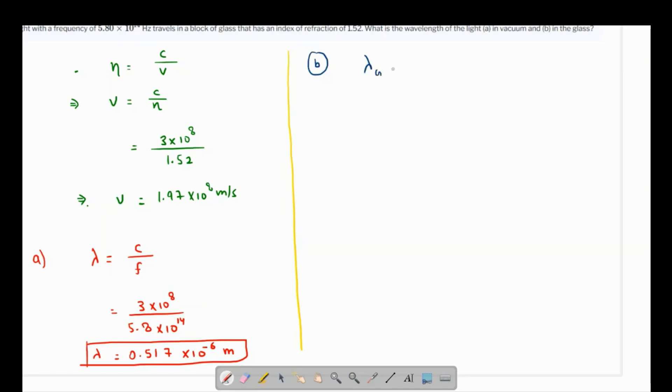So wavelength in glass, let's represent it by lambda_g. That's the speed in the medium, which is v, over the frequency which remains the same. So v is something which we already found: it's 1.97 times 10^8 over 5.8 times 10^14.